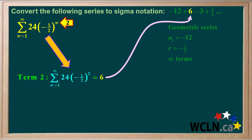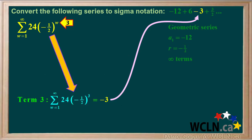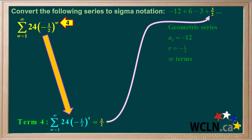For term 2, we'll put in 2 for w. Negative one half squared is positive one quarter, and 24 times one quarter is 6, which is the correct value for term 2. For term 3, we'll put in 3 for w. Negative one half cubed is negative one eighth, and 24 times negative one eighth is negative 3, which is the correct value for term 3. For term 4, we'll put in 4 for w. Negative one half to the power of 4 is positive one sixteenth, and 24 times positive one sixteenth is positive 3 over 2, which is the correct value for term 4.